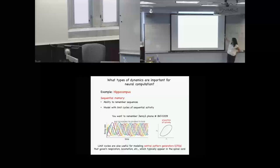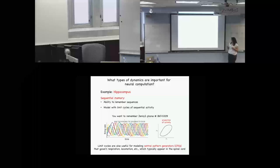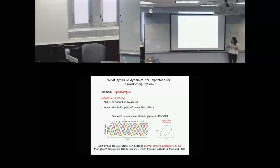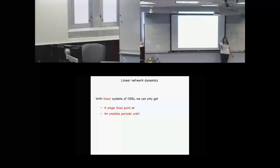Another situation modeled with limit cycles is central pattern generators — things for respiration or locomotion, any type of repetitive unconscious movement. Those are typically found in the spinal cord. Remember, with that linear system, we'd only get a single fixed point or an unstable periodic orbit. But we really need all of those other behaviors, and we can get those with a nonlinear system of ODEs.